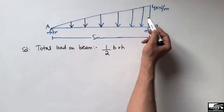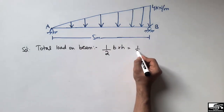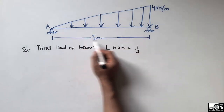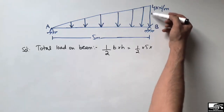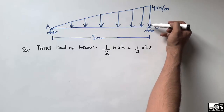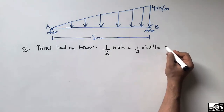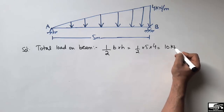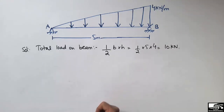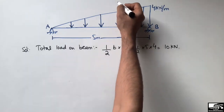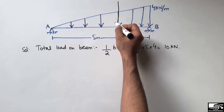The area of the triangle gives us the concentrated load. The base of the triangle is the length of the beam, which is 5 meters, and the height is the load magnitude, which is 4 kN/m. So: half × 5 × 4 = 10 kN. The total concentrated load acting on the beam is 10 kN.